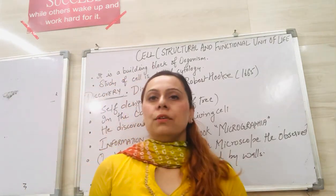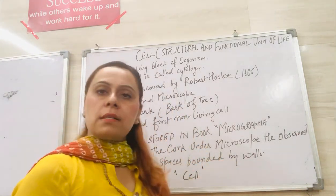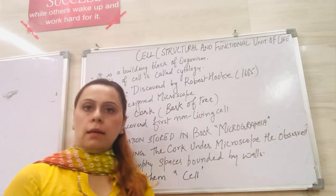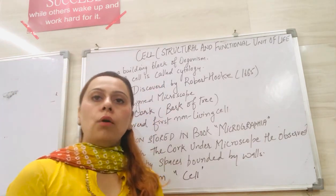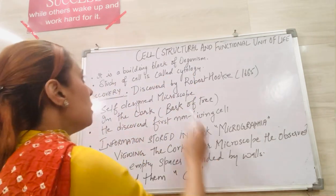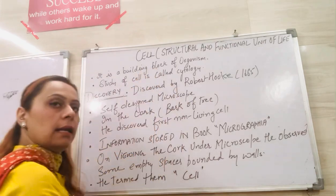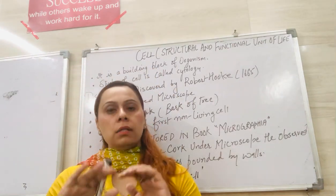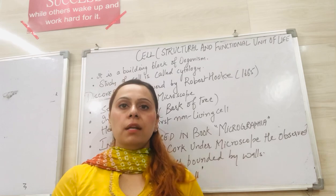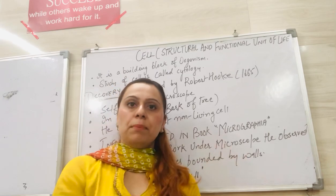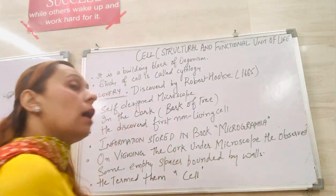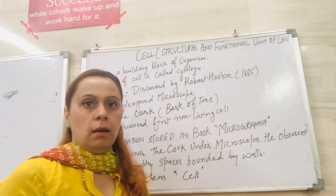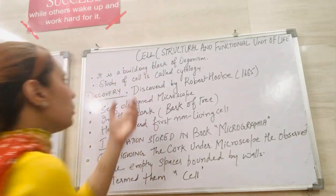Hello friends, today we are going to discuss the chapter 'Cell' from Class 9. We are going to explain what a cell is, what are the various types of cells, how the composition of cells varies from simple to complex cells, and what are the various organs present in the cell.